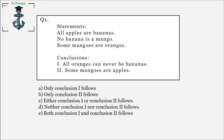Moving on to the first question: all apples are bananas, no banana is a mango, some mangoes are oranges. These are the three statements given to us and we have two conclusions. We have to see which of the conclusions follow, or if all or none follow. You may pause, go back, look at the types of Venn diagrams, try to draw one on your own, and then come back.